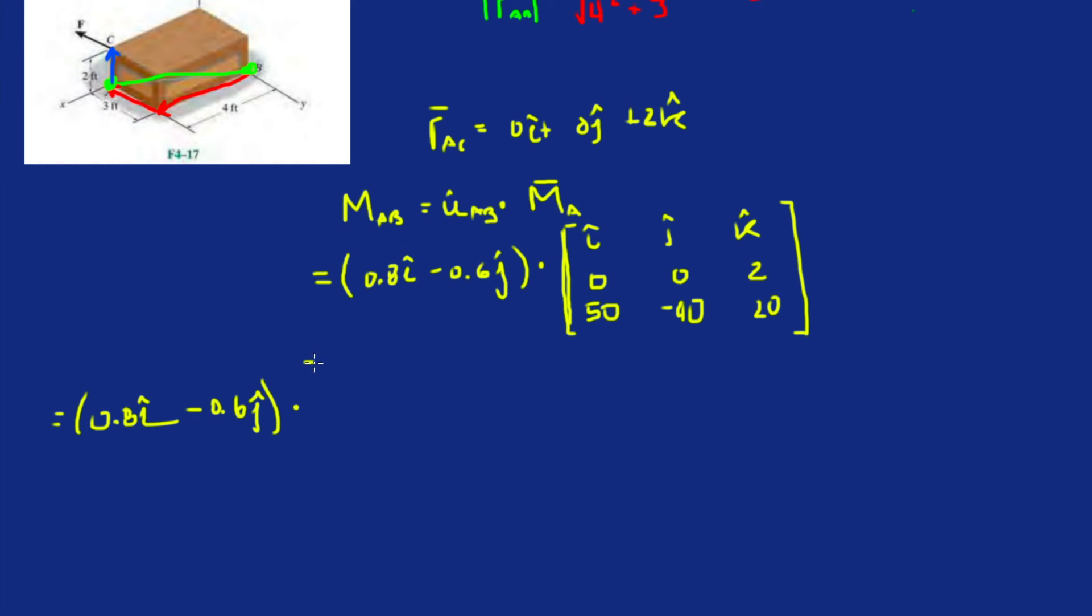We have i and j so we care about finding the i and j terms. For i: 0 times 20 is 0, minus 2 times -40 is plus 80. Then for j: 0 times 20 is 0, minus 2 times 50 is -100. The k term is just 0, but we don't care about it.